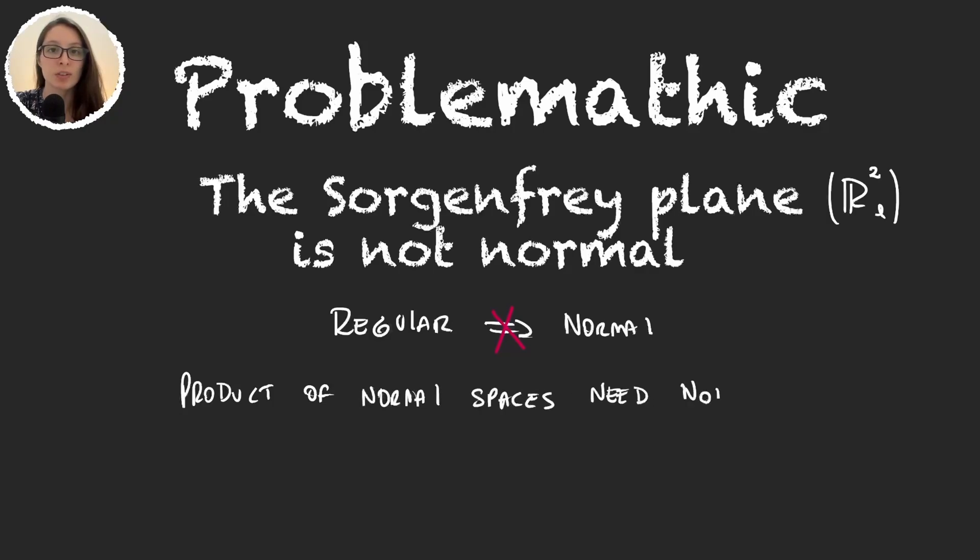In this video, as the title says, we will see that the Sorgenfrey plane is not normal. This is a very important example because it shows us that not every regular space is normal and that the product of normal spaces is not necessarily normal.